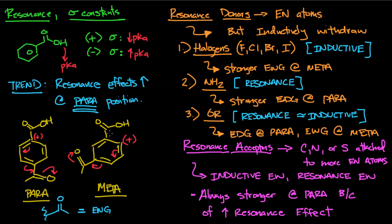Since the positive charge isn't on the carbon attached to COOH at the meta position, there's going to be less stabilization of the conjugate base. There's still going to be some stabilization, but it's not going to be as significant as at the para position. This reasoning also works for donating groups — withdrawing groups withdraw from the carbon directly across, so the para position is more important; the same is true for donating groups.